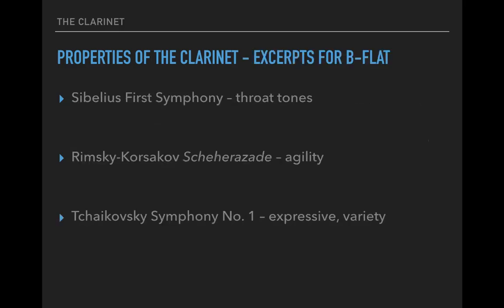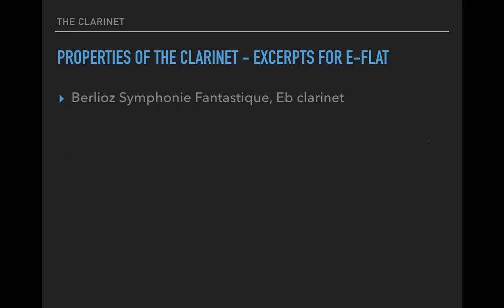We'll listen to some examples in class: the Sibelius First Symphony, Rimsky-Korsakov's Scheherazade, and Tchaikovsky Symphony No. 1. All of these demonstrate different things — the throat tones and middle range, Scheherazade demonstrating agility with leaping, jumping, and runs, and Tchaikovsky Symphony No. 1 being very expressive. This gives you a good foundation for the basics of clarinet.